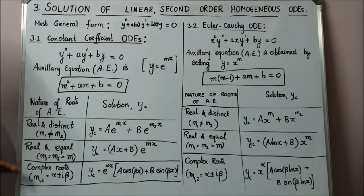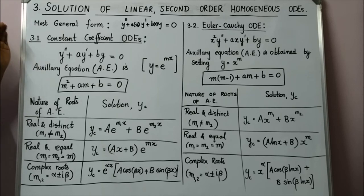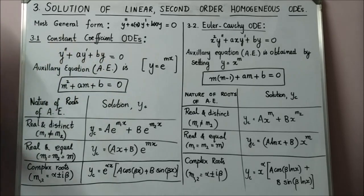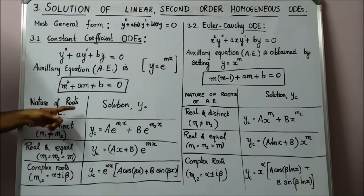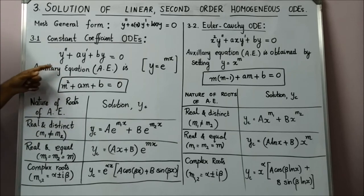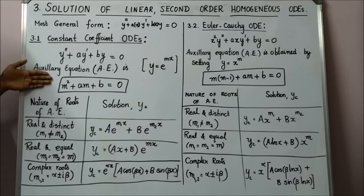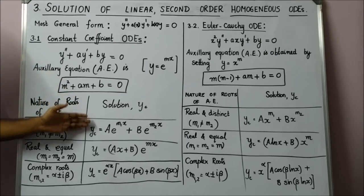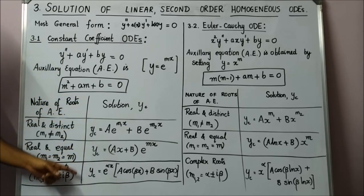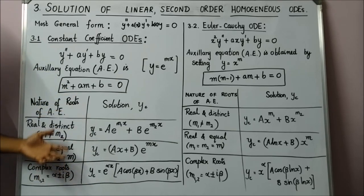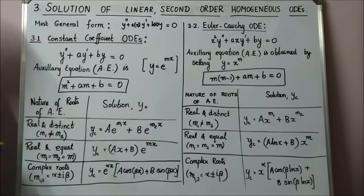This is how you obtain the solution to a linear second order homogeneous constant coefficient ODE. Just have in mind how to get the auxiliary equation, and once you solve it, how to get the solution. Please have this in your formula sheet before going to the exam.